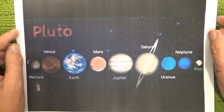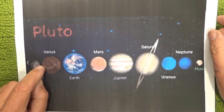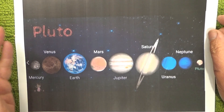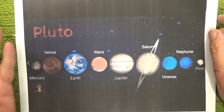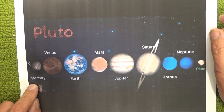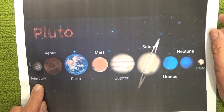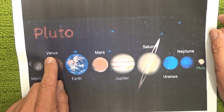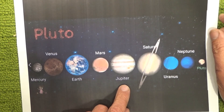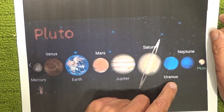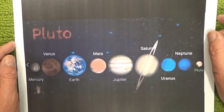Hello, today I'm going to share with you a simple way to remember the order of the planets starting at the Sun. The order of the planets is that you've got the Sun here on the left, and then the closest planet is Mercury, then Venus, then Earth, Mars, Jupiter, Saturn, Uranus, Neptune, and Pluto.